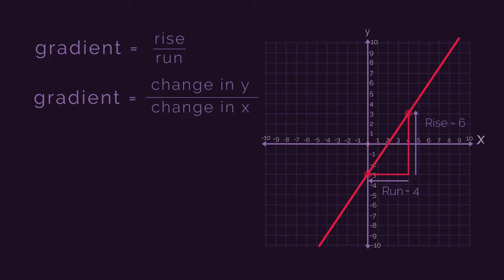So, for our line, gradient is rise over run, so 6 divided by 4, which we simplify, so the gradient is positive 3 over 2.